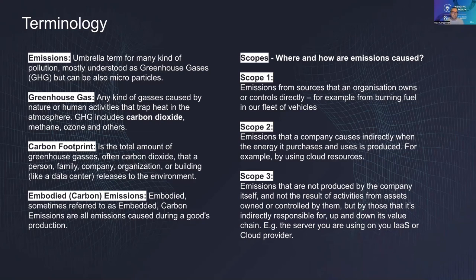Greenhouse gases, as the name suggests, heat up whatever is inside. By burning coal or gas, for example, we release carbon dioxide and other gases like methane into the atmosphere. They're invisible but act like a blanket around the Earth. Sunlight traveling toward Earth is normally partially reflected back to space, but greenhouse gases are very good at catching infrared light and throwing it back to Earth — that's why we have global warming.